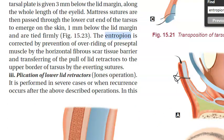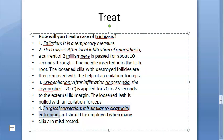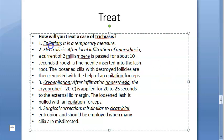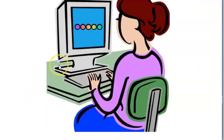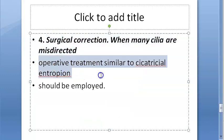Other surgical procedures include transverse everting suture, Wies operation, plication of lower lid retractors, and Jones operation. For exam purposes, remember three key treatments: epilation, electrolysis, and cryo-epilation. You can also write the treatment for the underlying cause such as trachoma or ulcerative blepharitis.